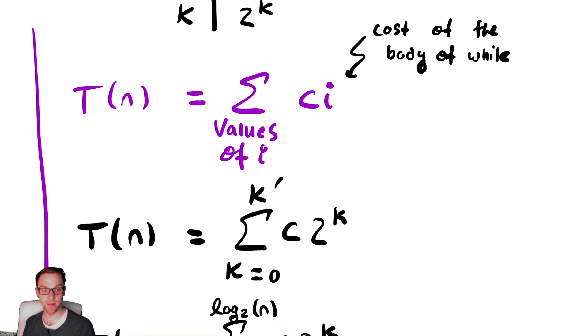We recontextualize that summation in terms of k, because k is a variable which we defined, which conveniently goes from 0 to 1 to 2 to 3, goes up by 1, and therefore can easily be written in summation notation.